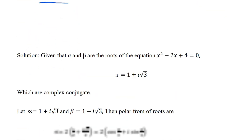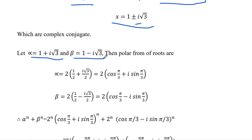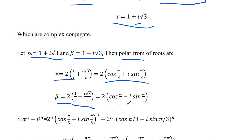We are given that alpha and beta are roots of x² - 2x + 4 = 0. Solving this, the roots are x = 1 ± i√3, which are complex conjugates. Let alpha = 1 + i√3 and beta = 1 - i√3. Writing these in polar form: alpha = 2(1/2 + i√3/2) = 2(cos(π/3) + i·sin(π/3)), and beta = 2(cos(π/3) - i·sin(π/3)).